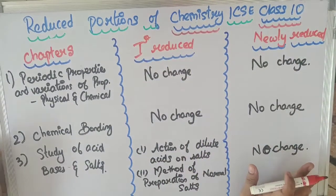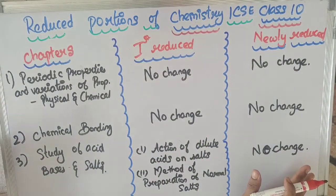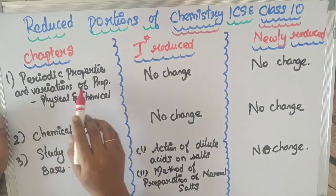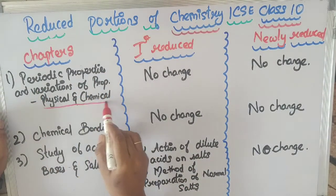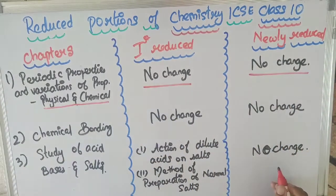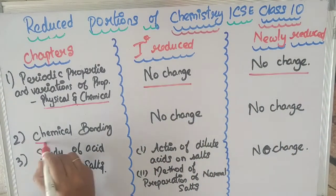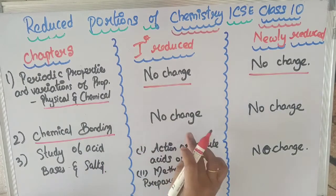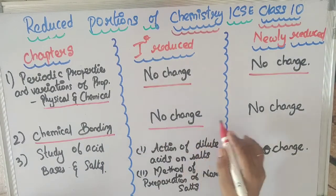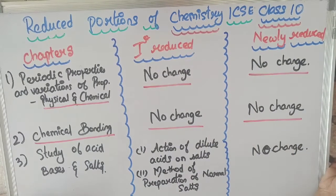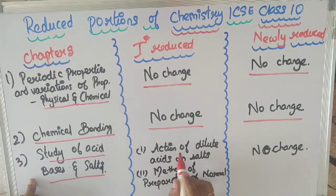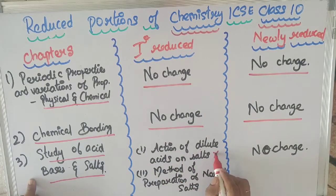The first chapter is Periodic Properties — there was no change during the first reduction and no change in the new reduction either. In the second chapter, Chemical Bonding, there is also no change in either the first or new reduction.